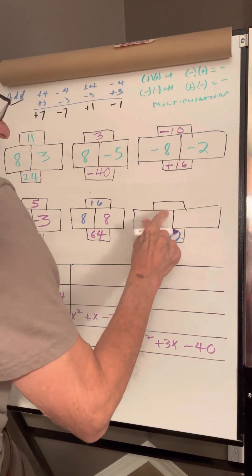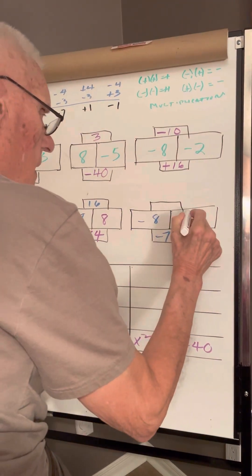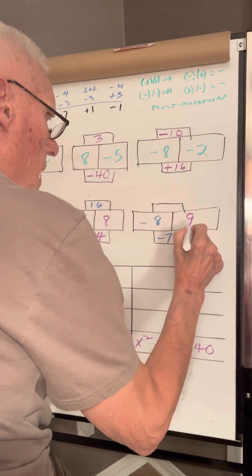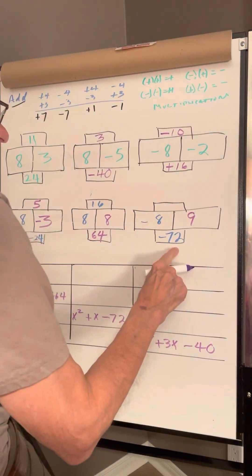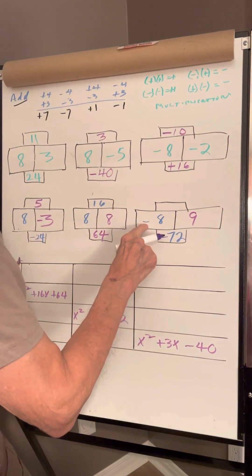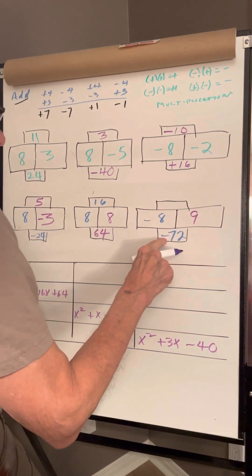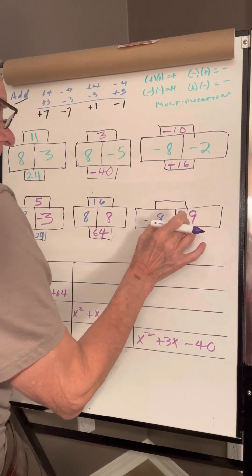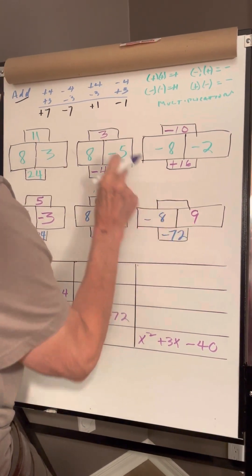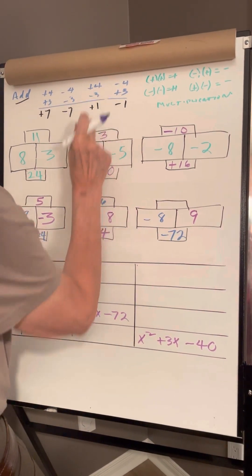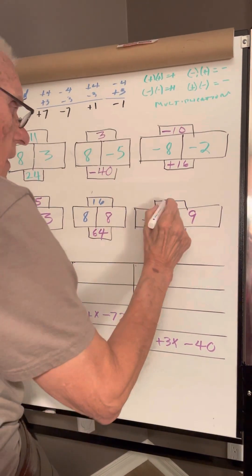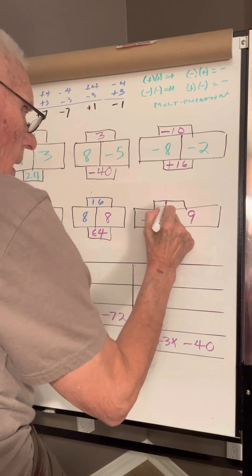Multiplication. 8 times 9 is 72. C1 negative, keep it. The signs are different. Take the difference. 1. 1.